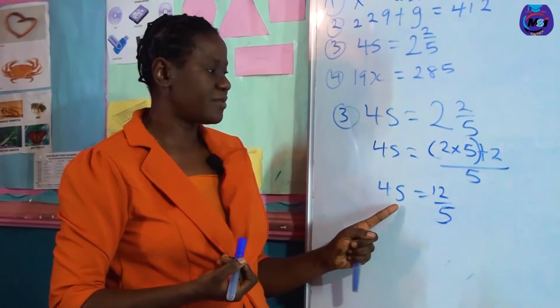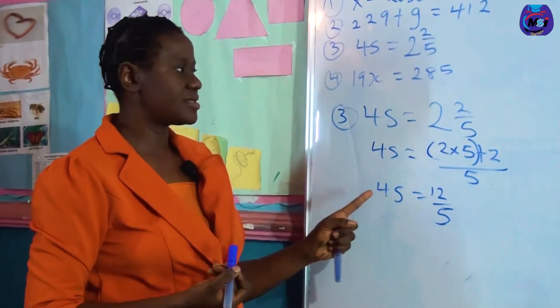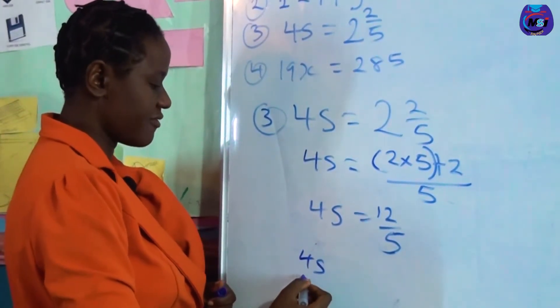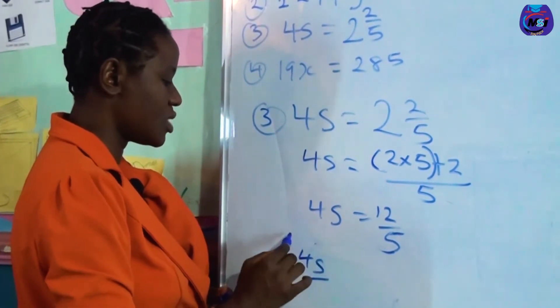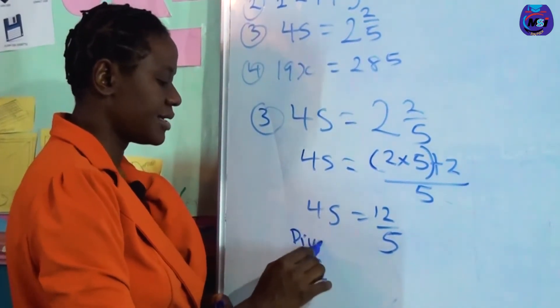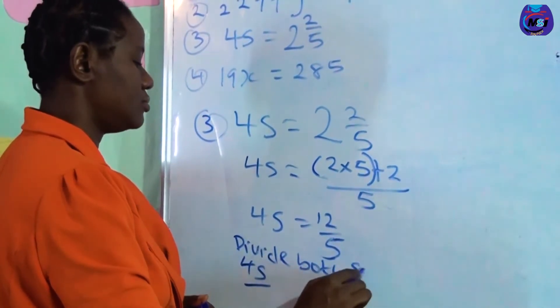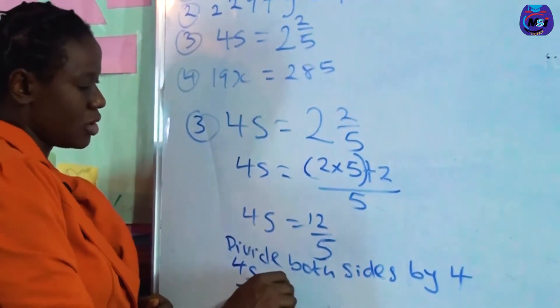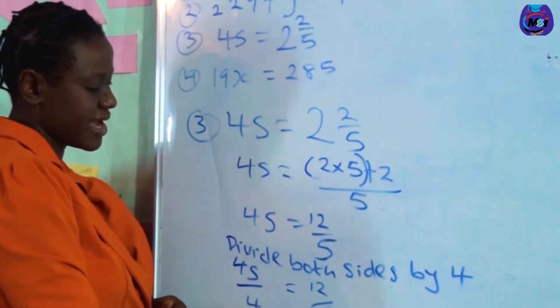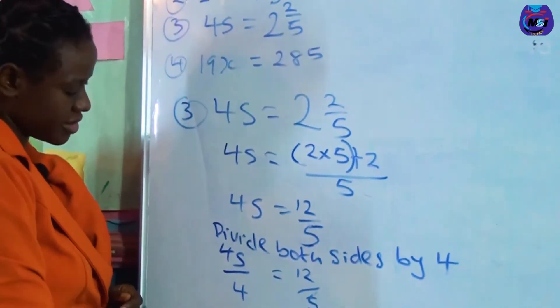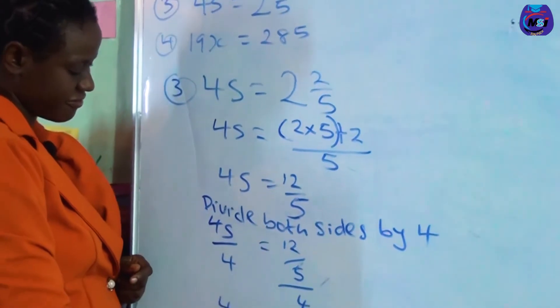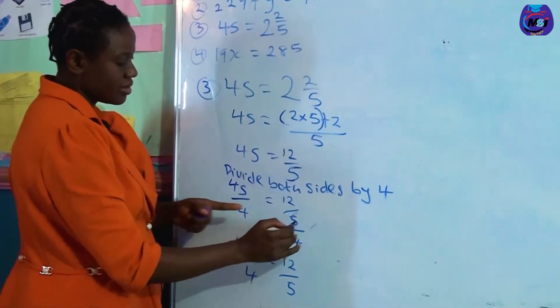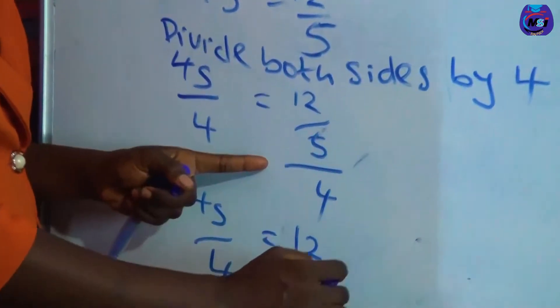We need to divide both sides by 4. 4x divided by 4 equals 12 over 5 divided by 4. Now this becomes 4x divided by 4 equals 12 over 5. This is a bigger division sign, this becomes times 4 over 1. Sorry, times 1 over 4. This is 4 over 1. By the time this division sign is inversed, we take the inverse of this division sign, it becomes 1 over 4.